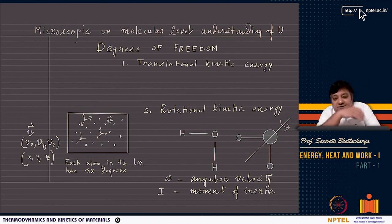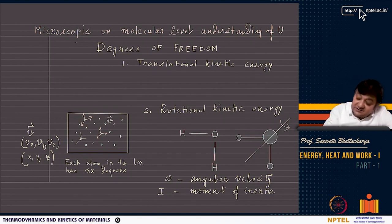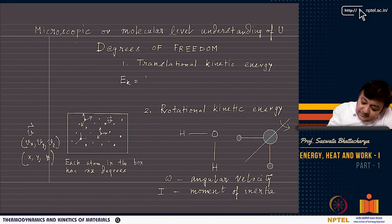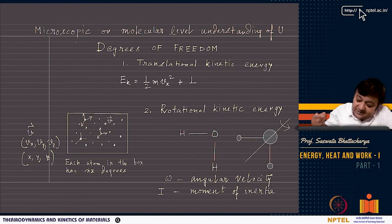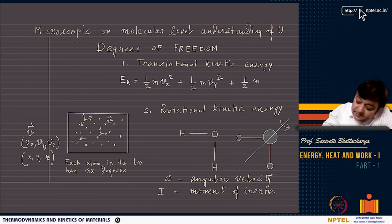These atoms are moving around and each has translational kinetic energy. For an atom of mass M, the translational kinetic energy is ½MVx² + ½MVy² + ½MVz². The values of Vx, Vy, Vz can be different for each atom.